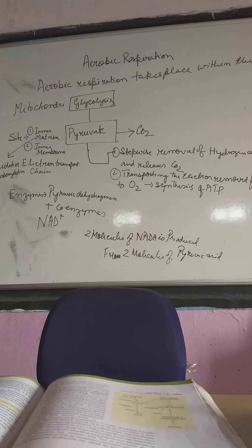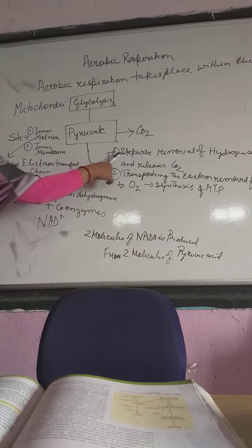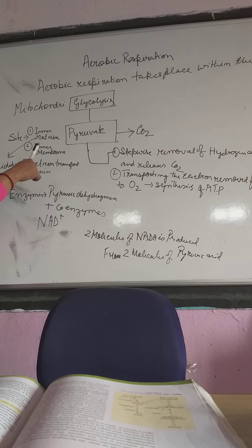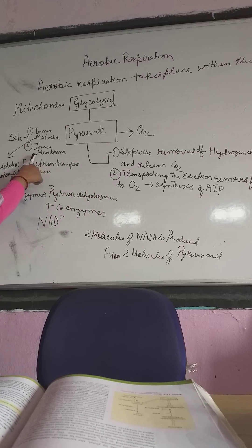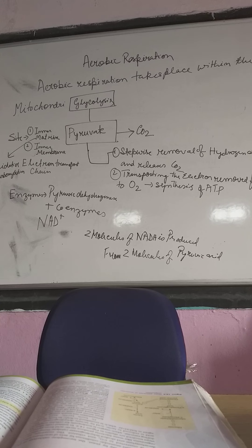This process happens in the mitochondria. The actual site of the first step is the inner matrix of the mitochondria, and the second step — the electron transport chain — happens in the inner membrane. This overall process is known as oxidative decarboxylation.